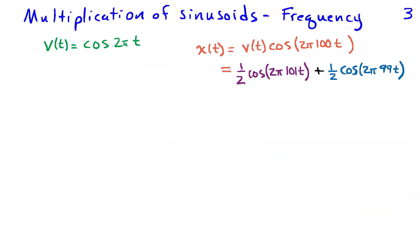Now let's look at what this multiplication has done in terms of the spectrum or as a function of frequency. Recall that our product of the 1 hertz sinusoid and the 100 hertz sinusoid gave us two terms, one at 101 hertz and one at 99 hertz.